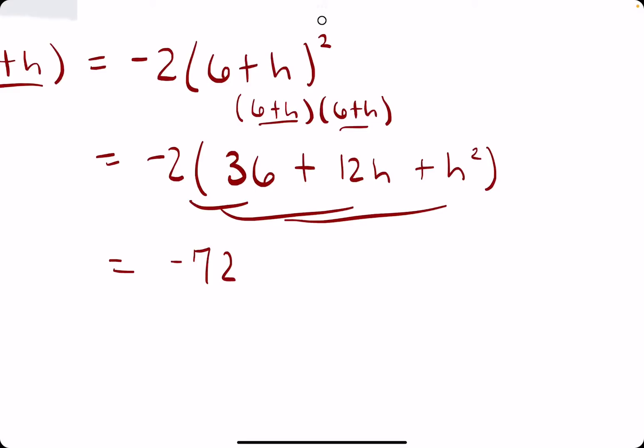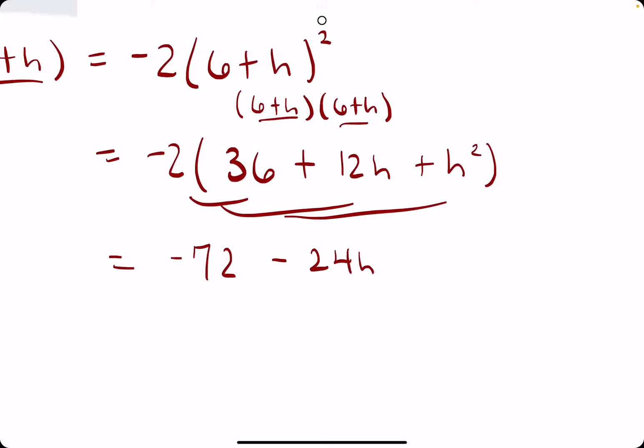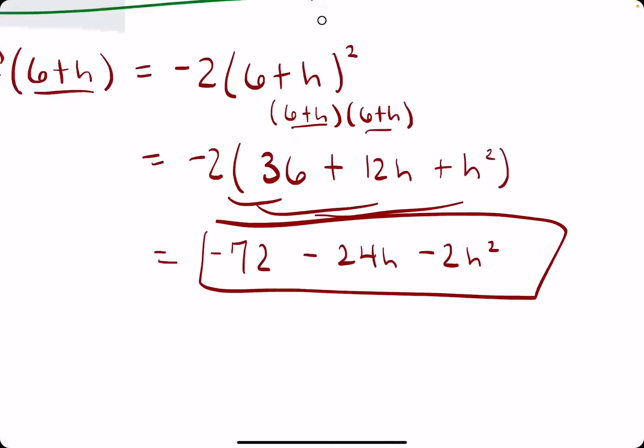So negative 2 times 36 is negative 72. Negative 2 times 12h is negative 24h. And then negative 2 times h squared, negative 2h squared.